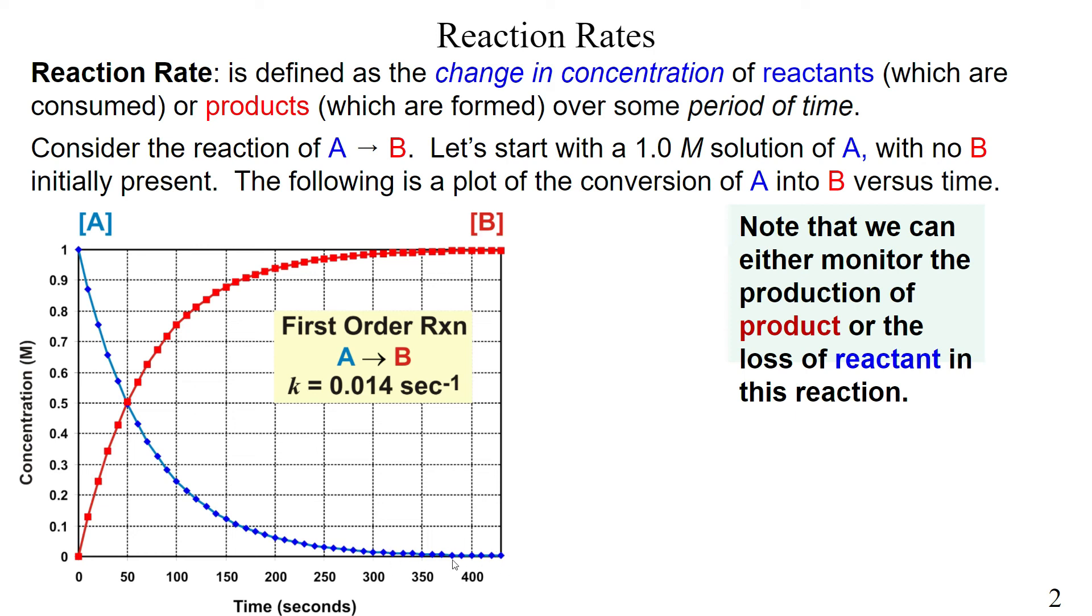And this is how we're going to be thinking of reaction rates. Over time, my change in concentration changes. In this case, my reactants are decreasing, my products are increasing. So basically, this sums it all up. We can monitor the production of a product, in this case, B, or the loss of a reactant, in this case, A. And that's what reaction rates are. A change in concentration over a period of time.